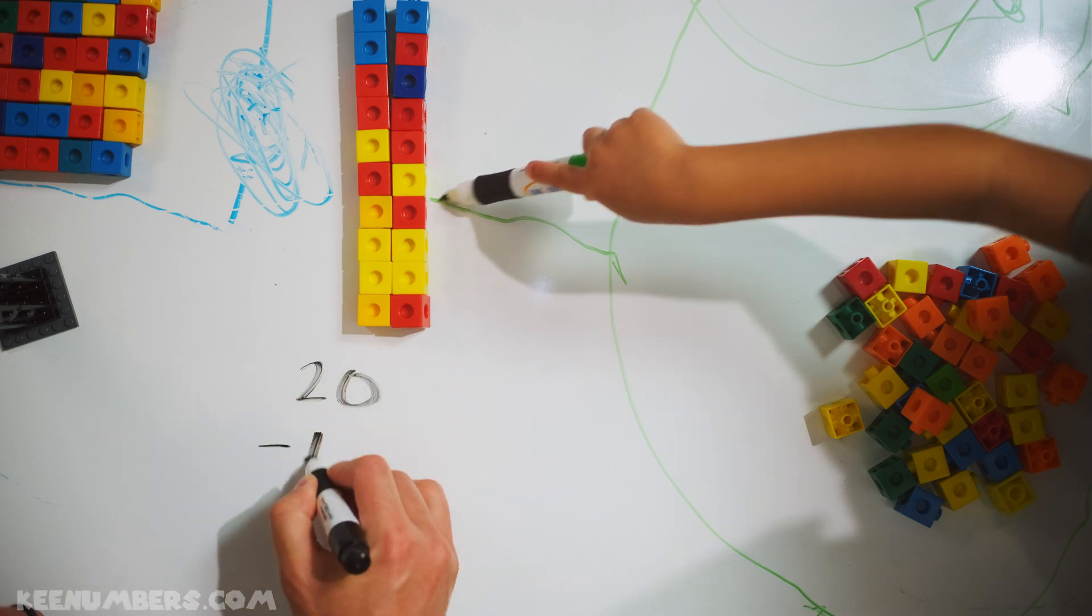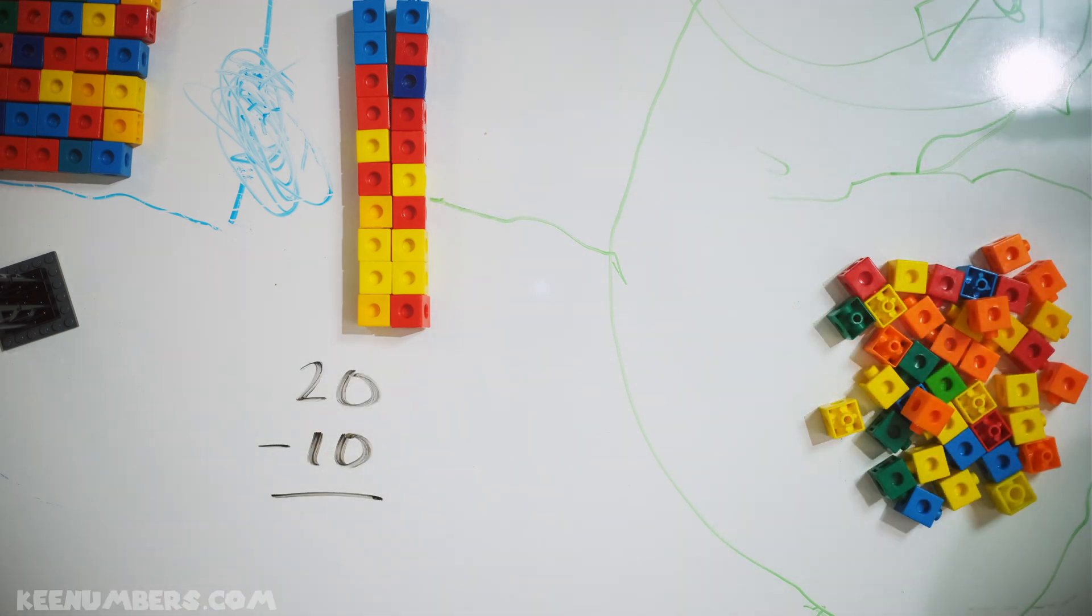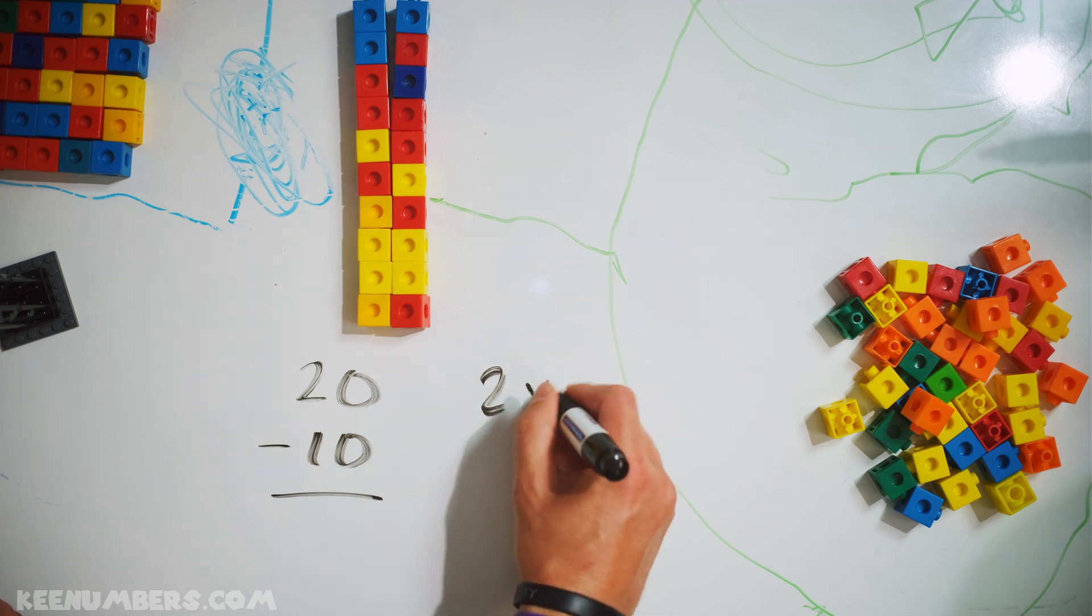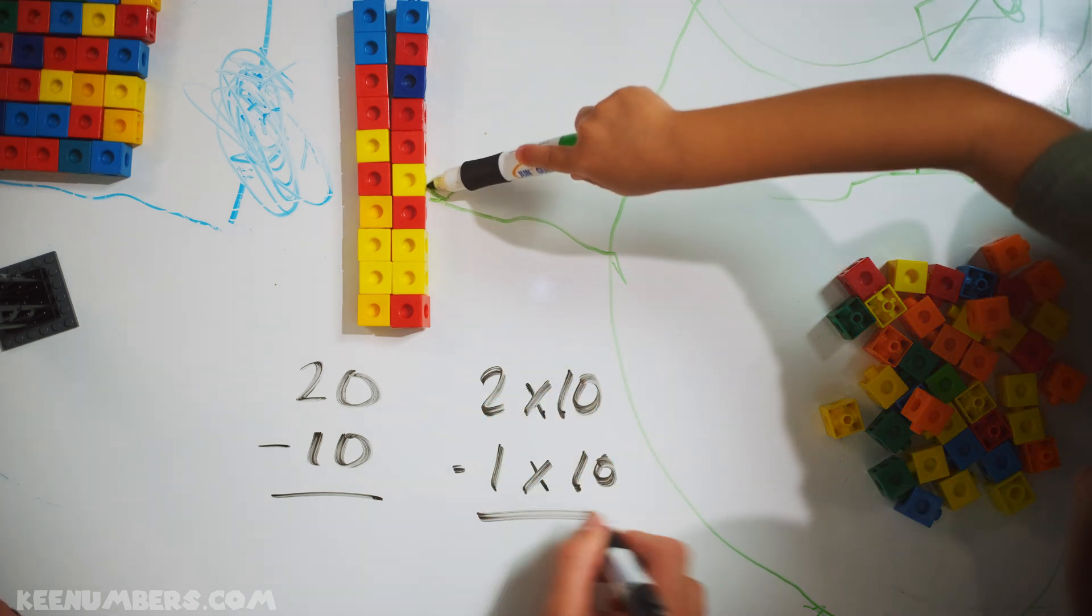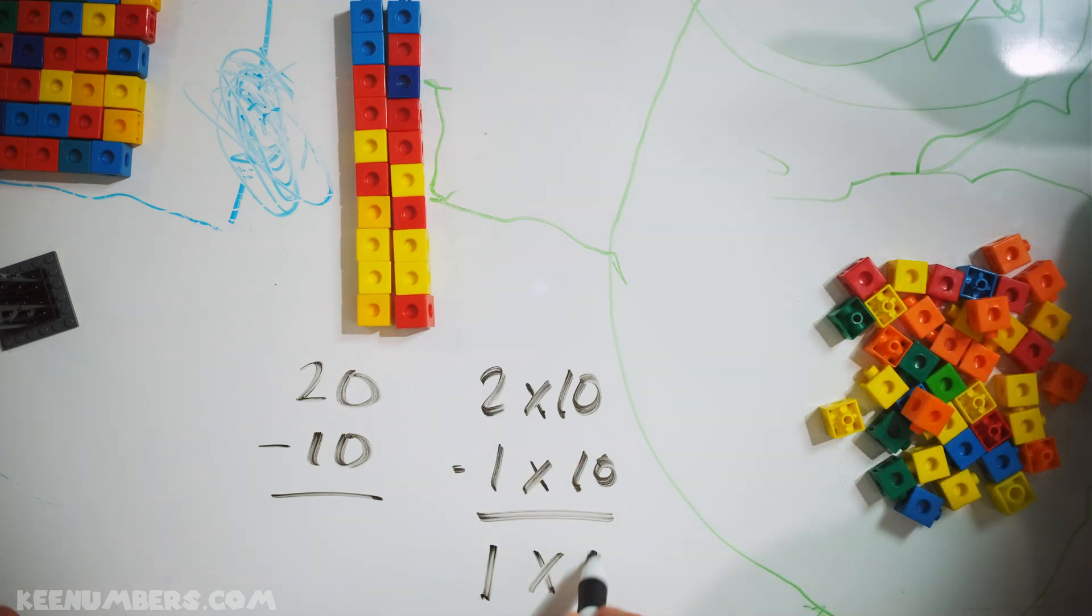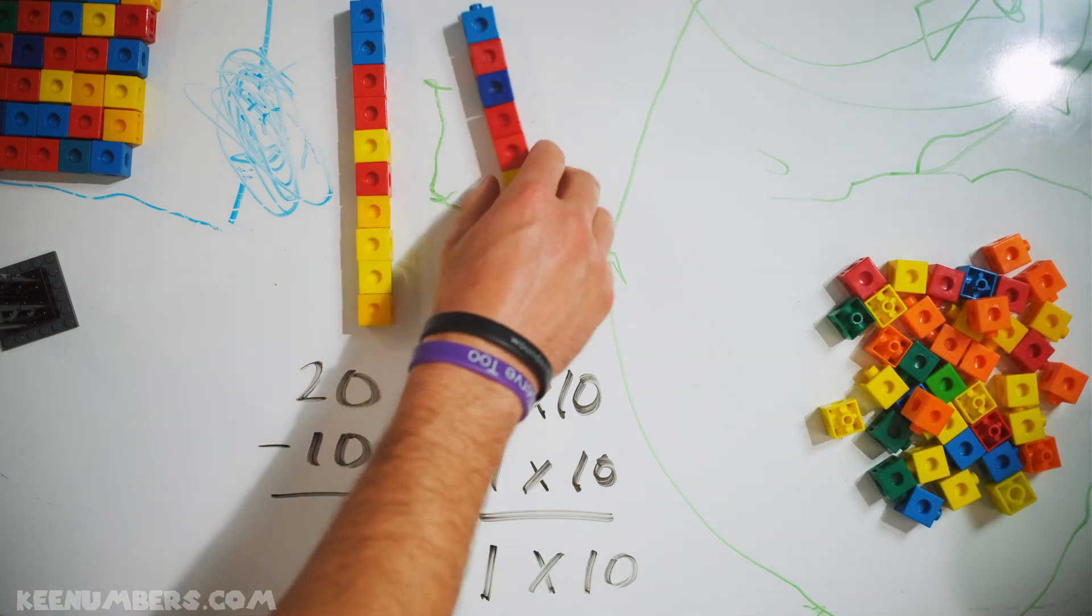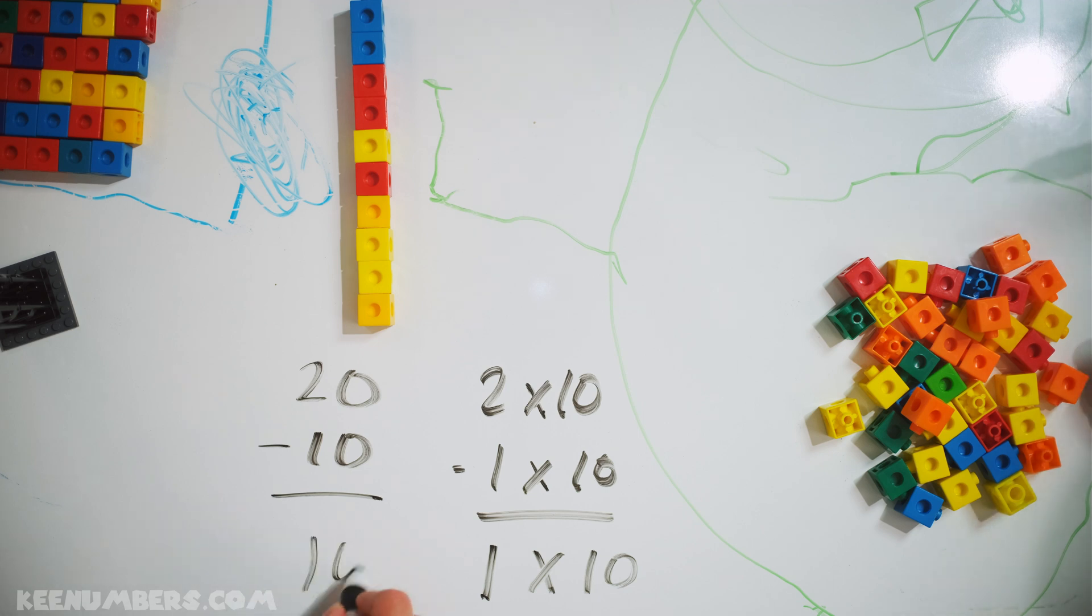Let's do 20 minus 10. You have two stacks of 10 and you're subtracting one stack of 10. So two minus one is one. You're just gonna be left with one stack of 10. That's also known as 10.